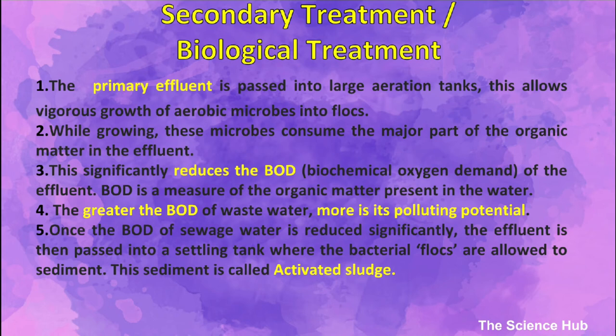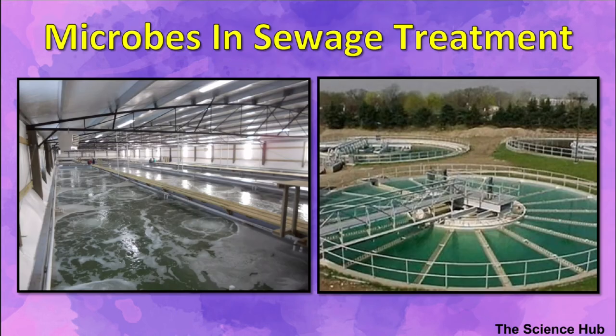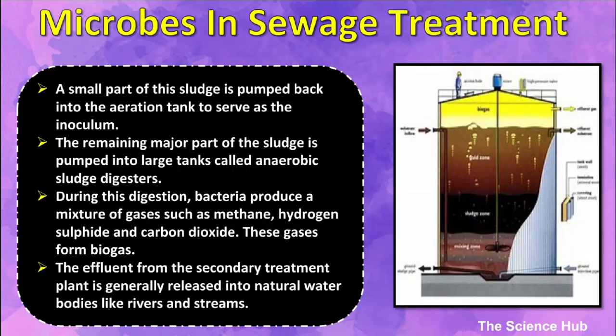In the settling tank, the bacterial flocs are allowed to sediment; this sediment is called activated sludge. A small part of the sludge is pumped back into the aeration tank to serve as inoculum. The remaining major part of the sludge is pumped into large tanks called anaerobic sludge digesters. During this digestion, bacteria produce a mixture of gases such as methane, hydrogen, hydrogen sulfide, and carbon dioxide — these gases form biogas.